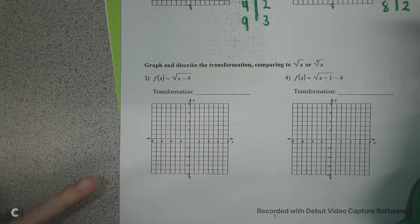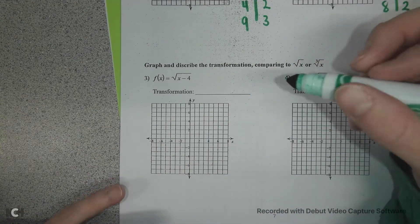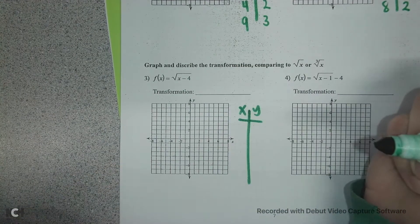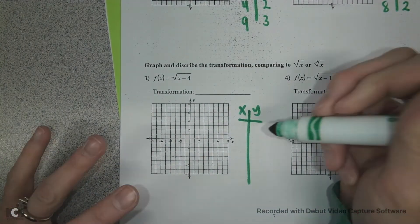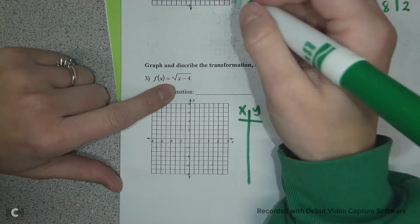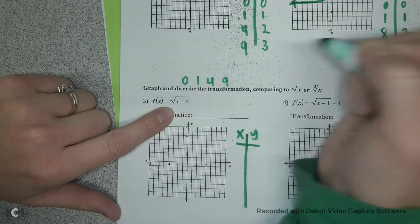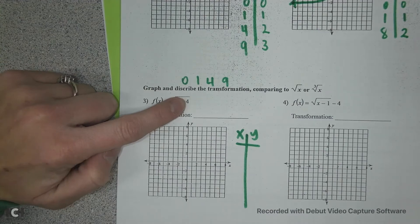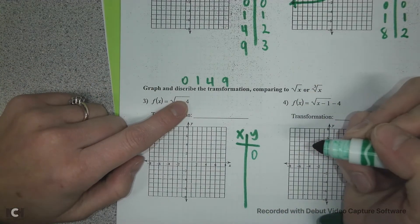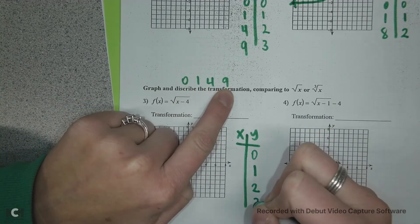So on number 3, we want to describe the transformation and graph it. For these, we want to make the radical equal a pretty number. With square roots, we're thinking about the numbers 0, 1, 4, and 9. So inside my radical I want it to equal 0, 1, 4, and 9 to get y values of 0, 1, 2, and 3. I need to figure out my x values by doing the opposite: since I'm subtracting 4 inside, I add 4 to each. So 0 plus 4 is 4, and 4 minus 4 is 0, and the square root of 0 is 0. The same with 1: 1 plus 4 is 5, and 5 minus 4 is 1, and the square root of 1 is 1.